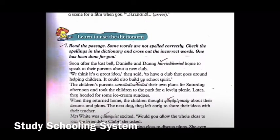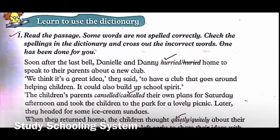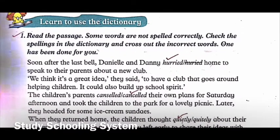This is basically learn to spell. Read the passage — some words are not spelled correctly. Check the spellings in the dictionary and cross out the incorrect words. One has been done for you, so you can look at the example here. Let's start reading.